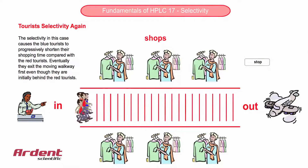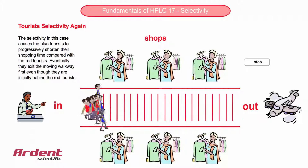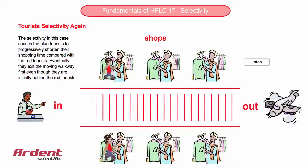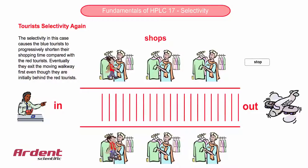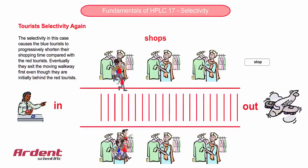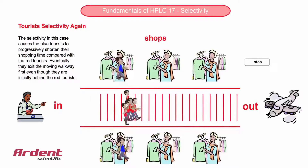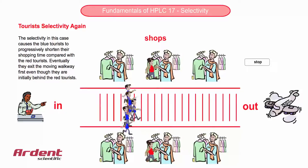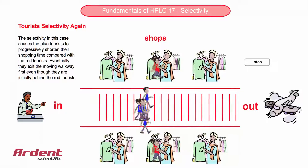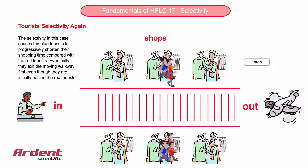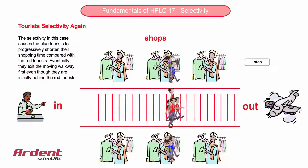Another way to view this peak swapping is to go back to the tourists. The red tourists are leading at the start, but then progressively spend more and more time in the shops, which allows the blue tourists to catch up and then actually reach the plane first.